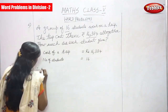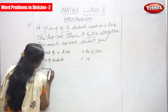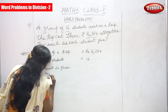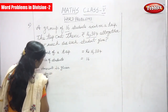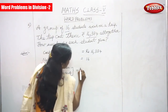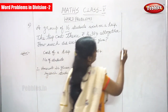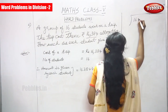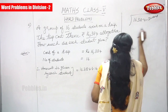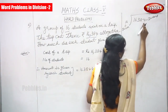Therefore, how much did each student give? The amount given by each student is equal to 16,384 divided by 16. 16,384 is the dividend and 16 is the divisor. So, 16,384 is divided by 16.